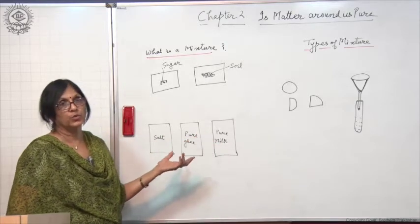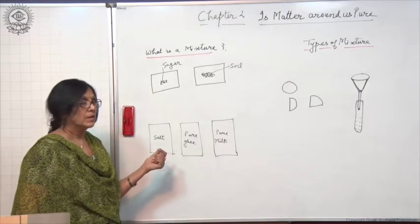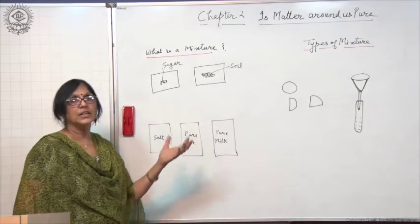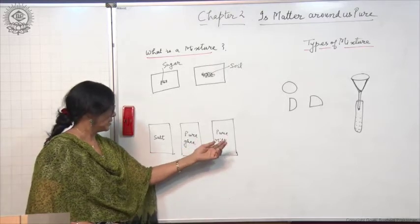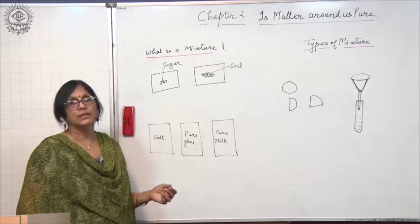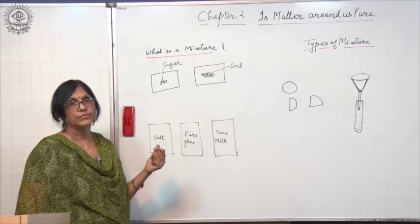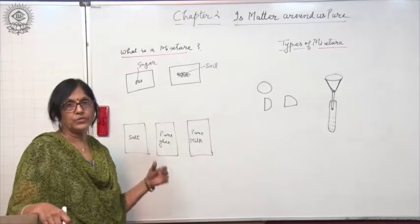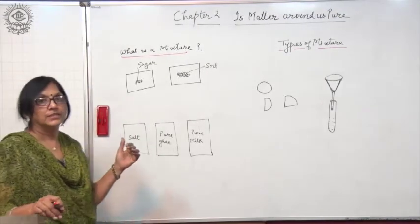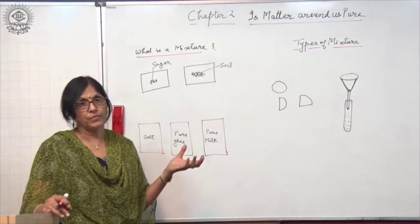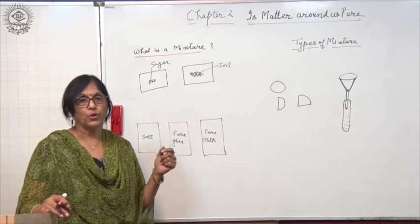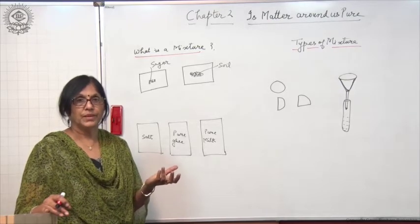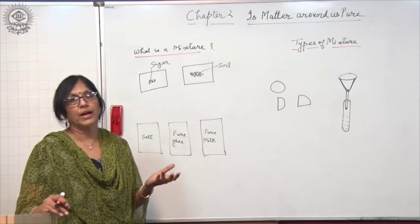For a common man, pure means there should not be any adulteration — nothing harmful should be mixed. Milk should contain only milk and nothing harmful in it. But are these substances actually pure? No — they do not contain a single substance. Pure milk, for example, is a mixture of water, fat and proteins. So all these substances do not contain a single substance.